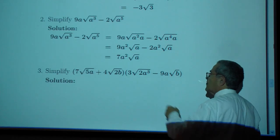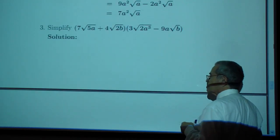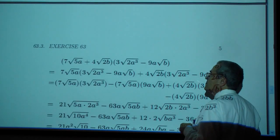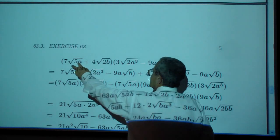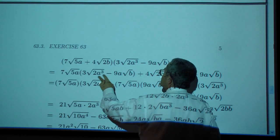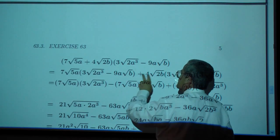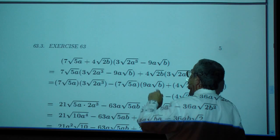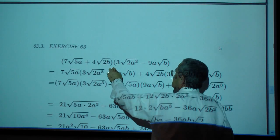Over here you have to distribute that gives you seven square root of five a times three square root of two a cubed multiplied by nine a square root of b and then four times square root of two b.